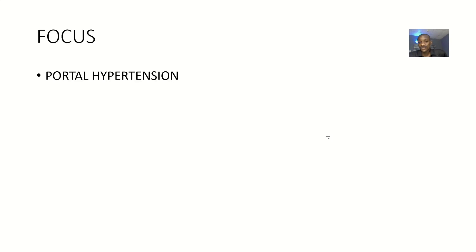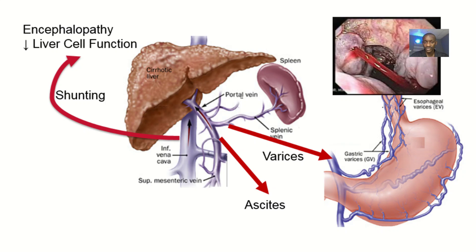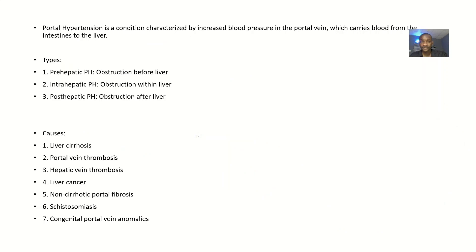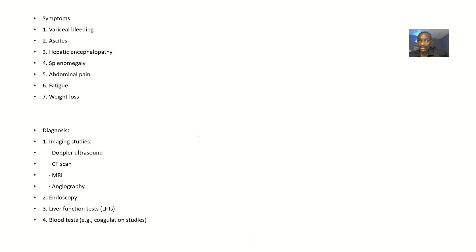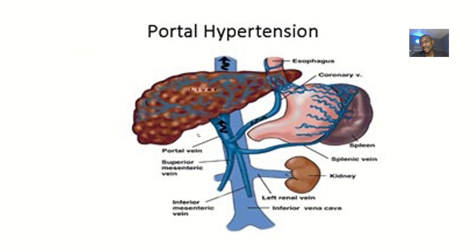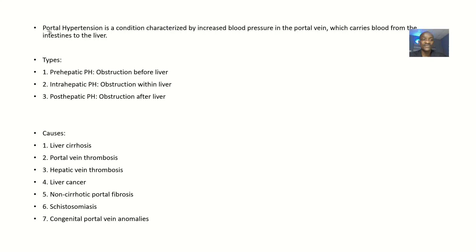Portal hypertension involves the portal vein — there's a backlog of blood in the liver as blood is not flowing out properly. We'll talk about the types, causes, symptoms, diagnosis, treatment, and possible complications of portal hypertension.